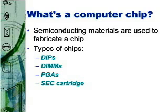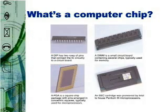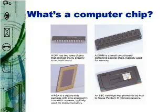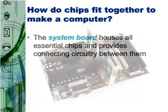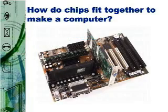Other chip carrier types include long slim DIMMs, or dual inline memory modules; pin cushion-like PGAs, or pin grid arrays; and cassette-like SEC cartridges, or single-edge contact cartridges. Terms like DIMM and PGA frequently appear in computer ads. The computer's main circuit board is called the system board, or motherboard, or main board. This houses all the essential chips and provides connecting circuitry between them.